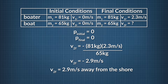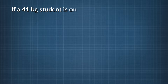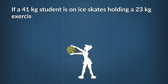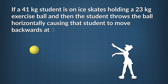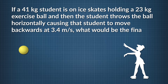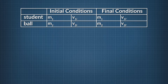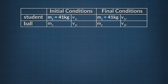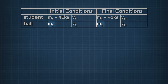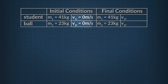Here's another example of a problem in which conservation of momentum is used to find the answer. If a 41 kg student is on ice skates, holding a 23 kg exercise ball, and then the student throws the ball horizontally, causing the student to move backwards at 3.4 m/s, what would be the final velocity of the ball? The first thing we want to do is create a data table. The mass of the student, M sub 1, is 41 kg. The mass of the exercise ball, M sub 2, is 23 kg. Initially, both the student and the ball have a velocity of zero before the ball is thrown.